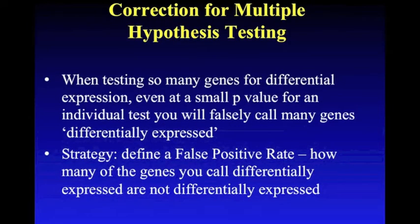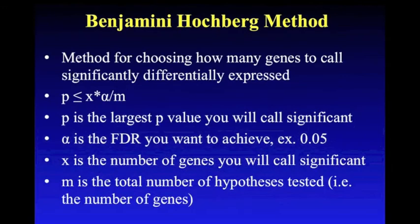After performing these statistical tests, it's important to correct for multiple hypothesis testing. When testing many genes for differential expression, even at a small p-value for an individual test, you will still falsely call many genes differentially expressed. The strategy is to define a false positive rate — how many of the genes you call differentially expressed are not actually differentially expressed. One method is the Benjamini-Hochberg method. It uses the equation p ≤ (x × alpha) / m, where p is the largest p-value you'll call significant, alpha is the false discovery rate you want to achieve (such as 5%), x is the number of genes called significant, and m is the total number of hypotheses tested.